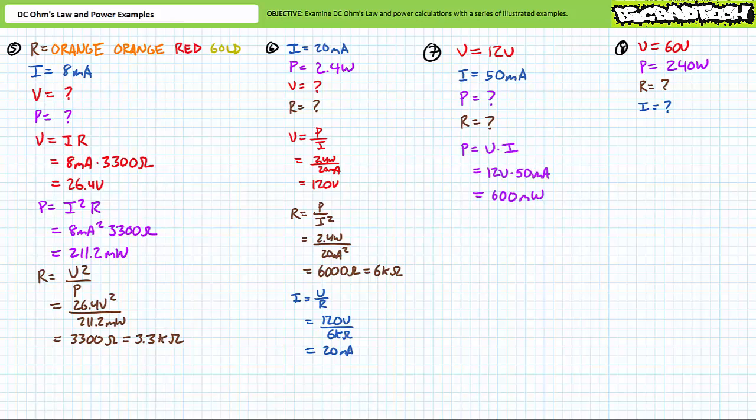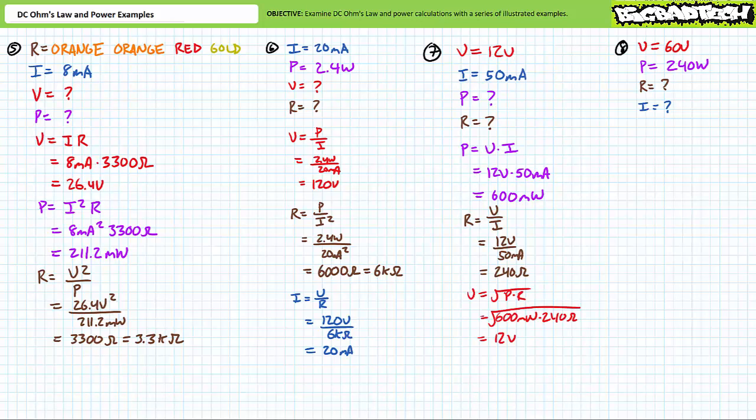Our next problem features an element known to be experiencing a 12 volt differential while drawing 50 milliamps of current. We're being asked to solve for the power and the resistance. Power is equal to voltage times current. Substituting in our given values demonstrates this element must be dissipating 600 milliwatts of power. Resistance is equal to voltage divided by current. Substituting in our given values yields a resistance of 240 ohms. The supporting calculation verifies these results, where voltage is equal to the square root of power times resistance. Substituting in our calculated values does indeed yield a voltage differential of 12 volts.